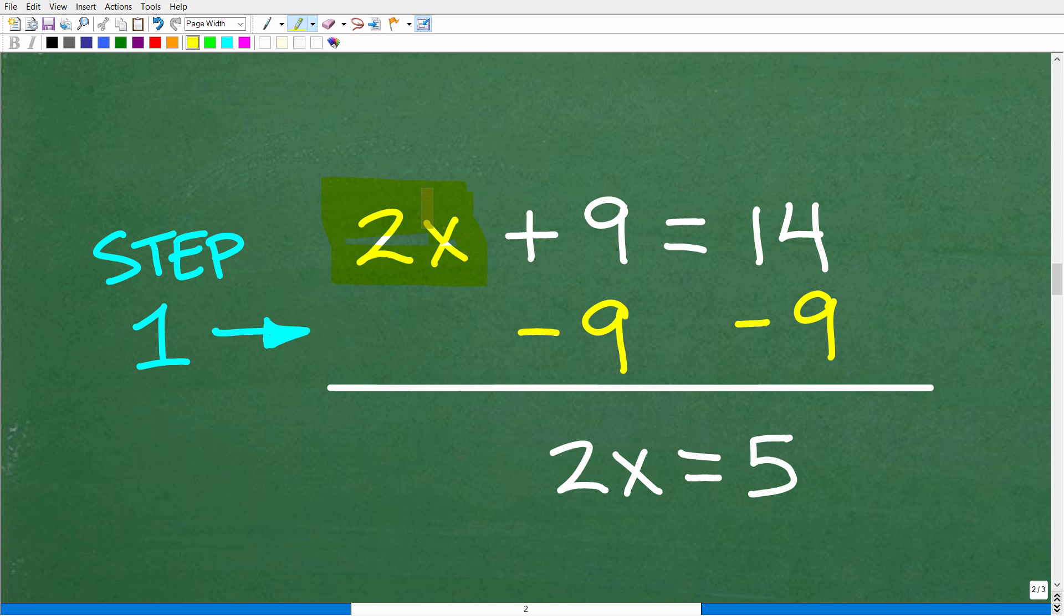Okay, so 2x is the term. We want to get that on one side of the equation. So how do we do that? Well, we're going to subtract 9 from both sides of the equation. Then add down in a column manner. So 2x plus nothing is 2x. 9 minus 9 is 0. We don't need to write that. And 14 minus 9 is 5. Alright, so this is step 1. Now we're ready to take the next step to solve this equation, which, of course, is having you quickly subscribe to my YouTube channel.